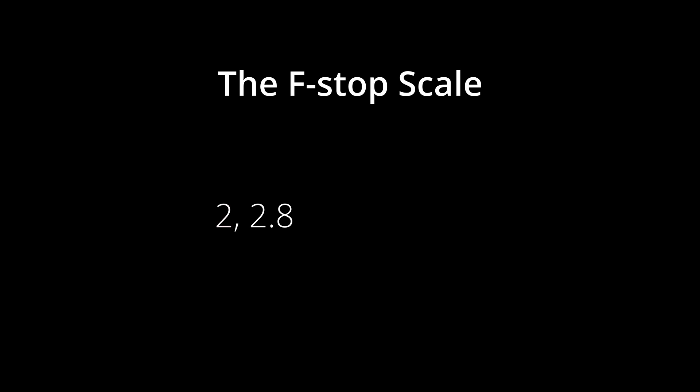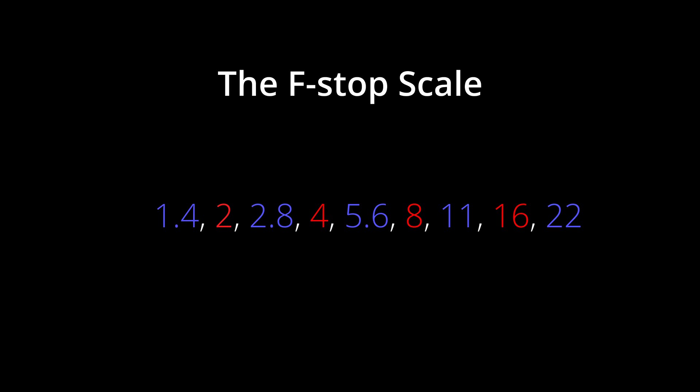Back to the f-stop scale: we have f2 and f2.8 — what's next? Here's the trick that makes it easier to remember: every other number doubles. To find what comes after 2.8, look at what comes before it — that's 2 — so the next one is f4, which is double of 2. It continues like this: 5.6, then 8, 11, 16, and 22. Going brighter than f2, we have f1.4, which is half of 2.8, and one stop brighter than that is f1. The scale can theoretically expand in either direction, but these are the most common ones to know.